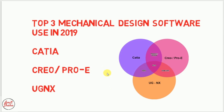Some companies use two or more software. For example, Tata Motors uses both CATIA and Creo. Creo is used for the engine domain like casting and engine domain, while CATIA is used for exterior, interior, and wiring harness. That's why different companies use different software, but mostly these three software are used.